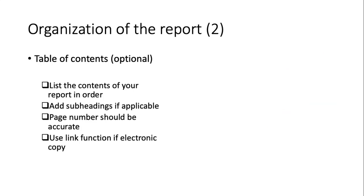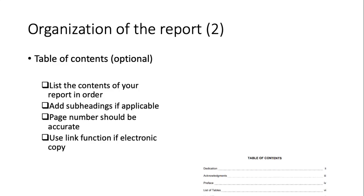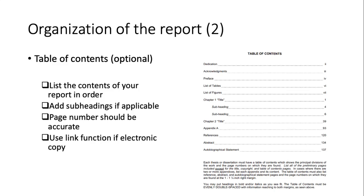You can include a table of contents in your report, though this is optional. If you are writing a brief report or short paper, it is not required, but for a book or long paper it is better to include one. In the table of contents, you should list the contents in order, add headings if applicable, and provide accurate page numbers. If providing an electronic copy in Word or PDF, you can use link functions so readers can click to navigate directly to a section.